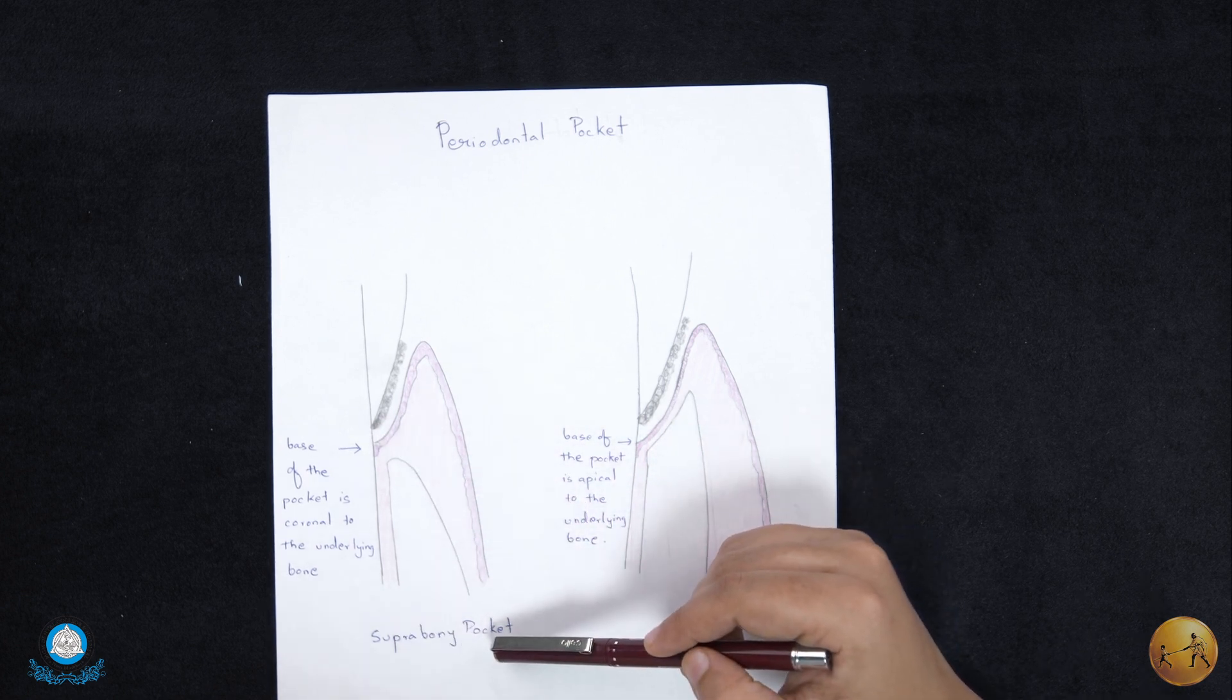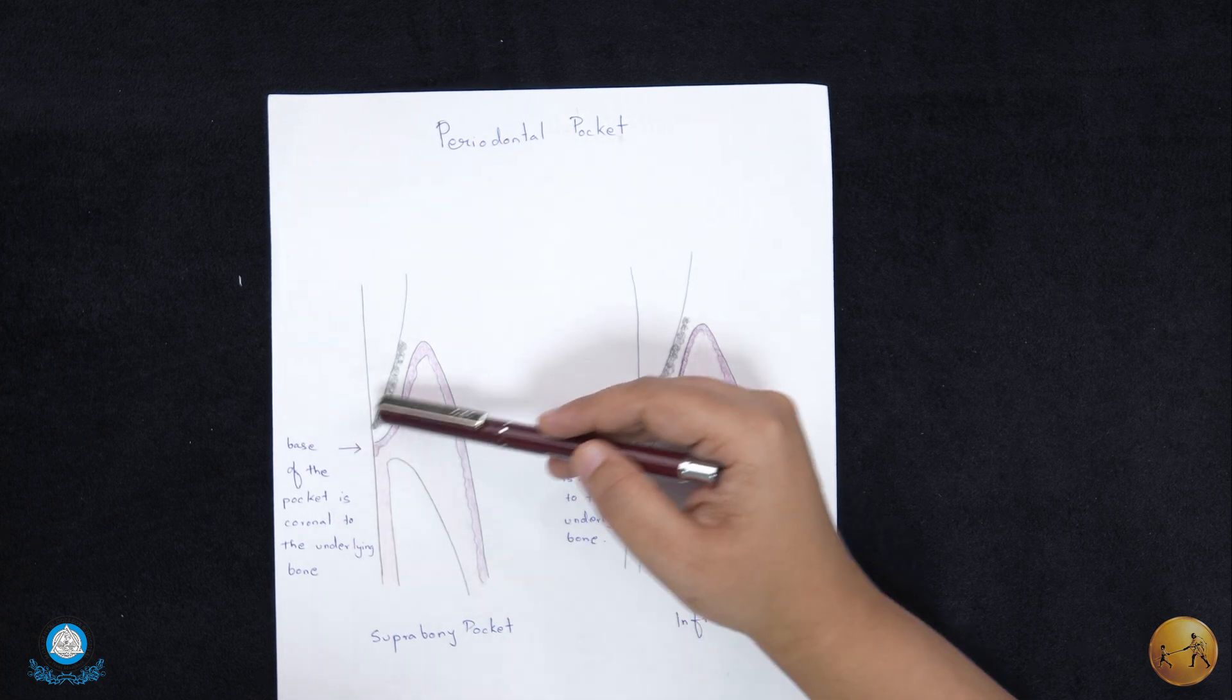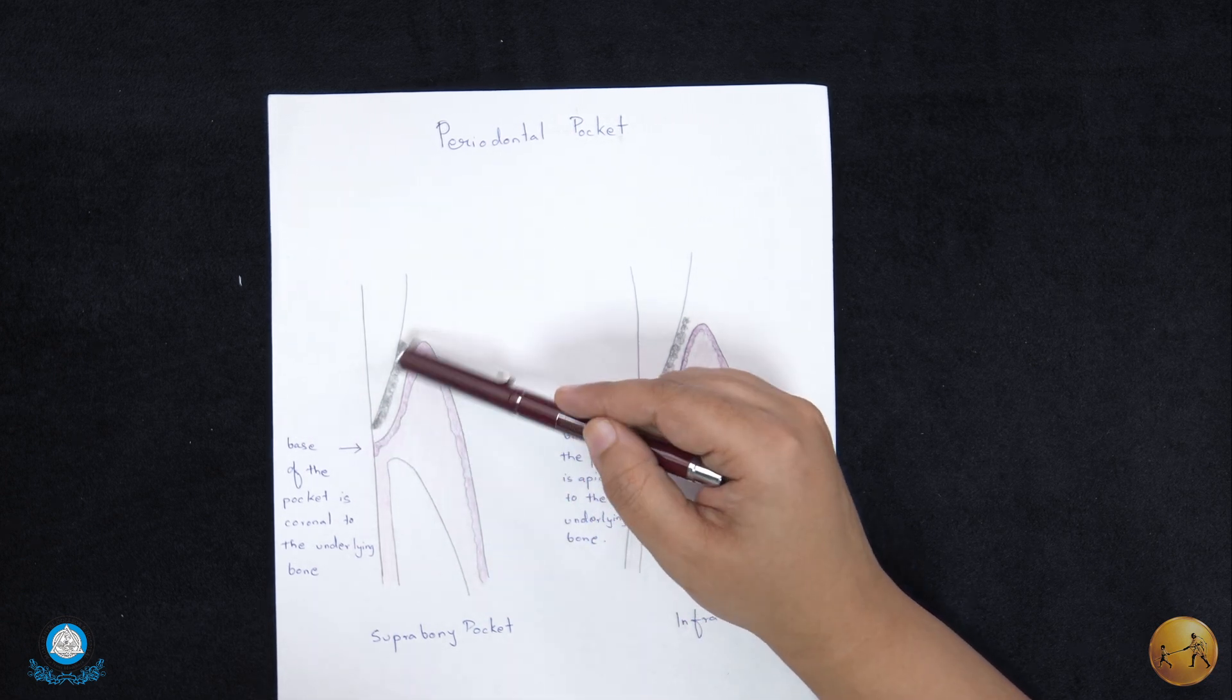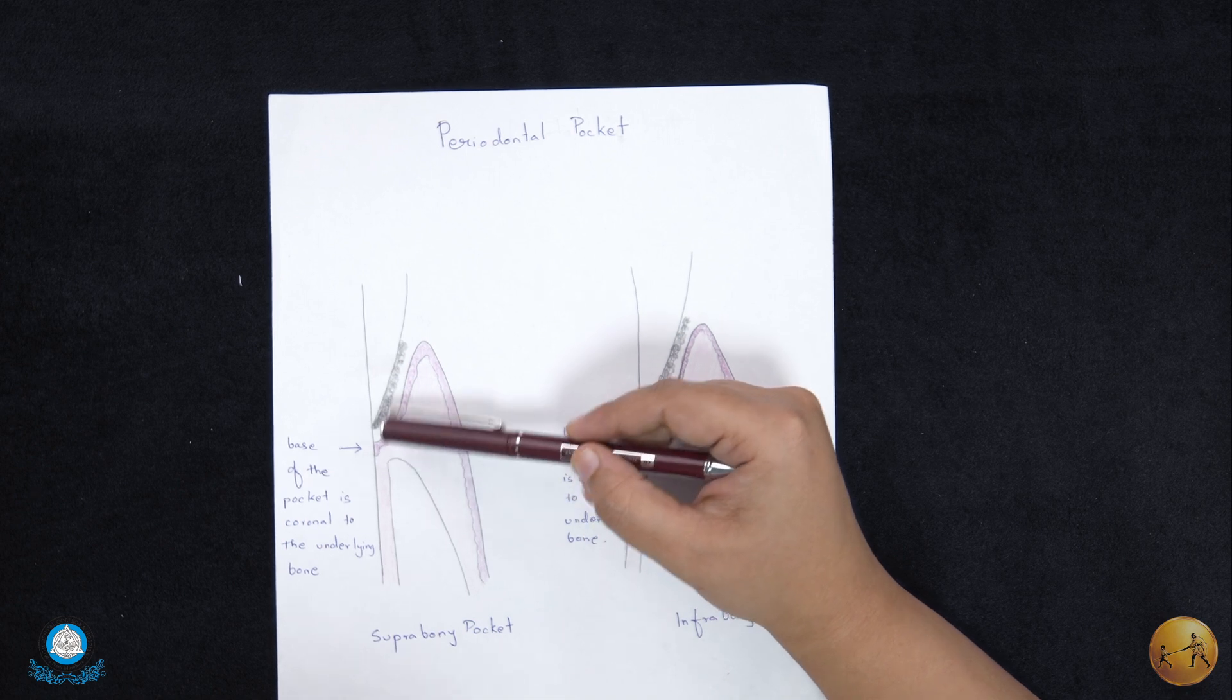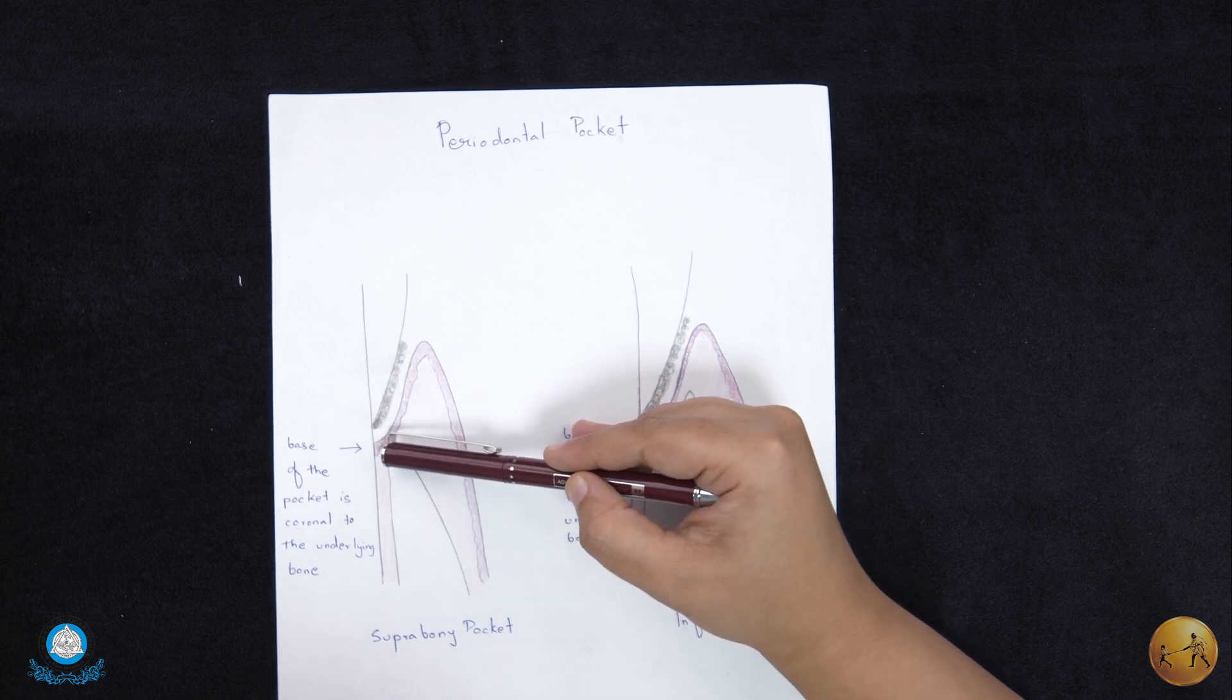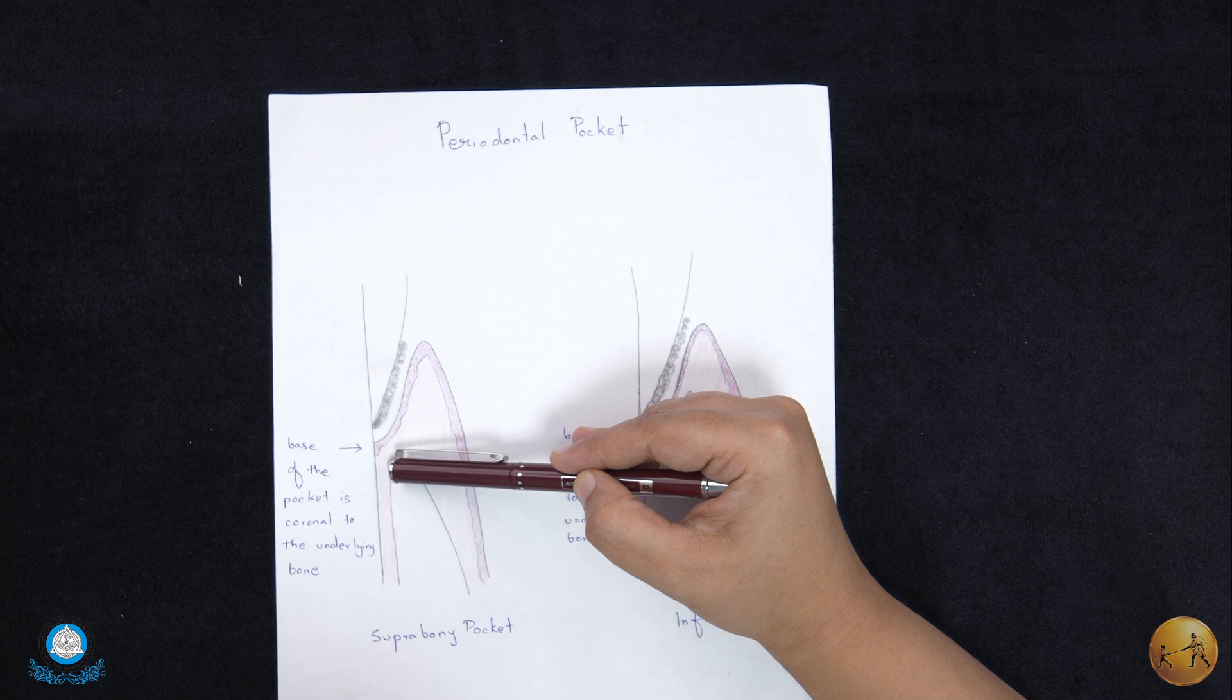Suprabony pocket is when the base of the periodontal pocket is coronal to the underlying bone. As you can see here in this picture, where the base of the pocket is coronal to the alveolar crest.